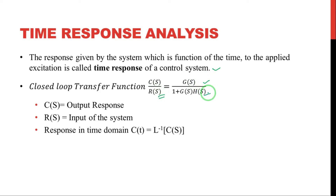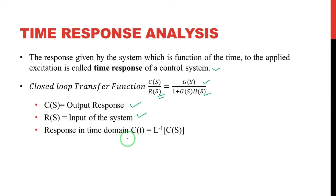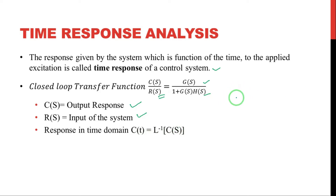The closed-loop transfer function C(s)/R(s) is equal to gain divided by gain plus feedback gain, where C(s) is the output response and R(s) is the input response in the s-domain. If we want to get the response in the time domain, then c(t) is equal to the inverse Laplace transformation of C(s).